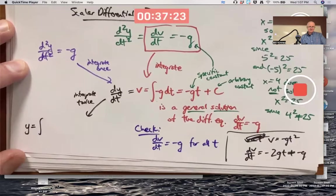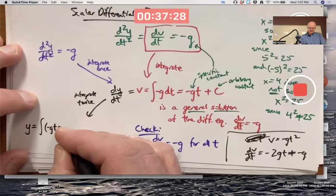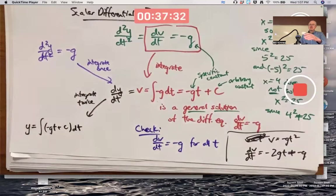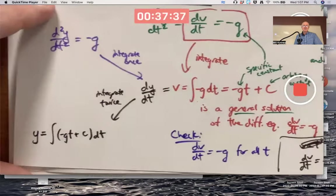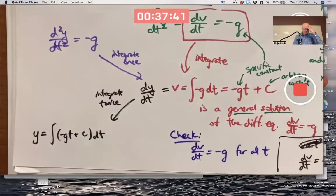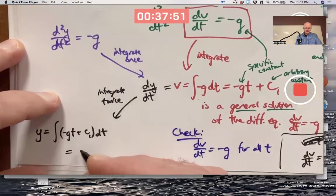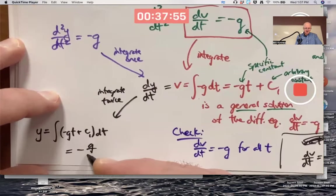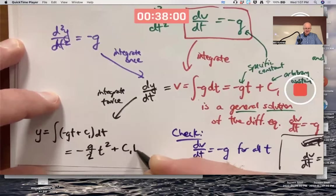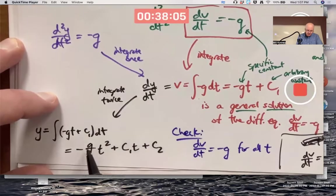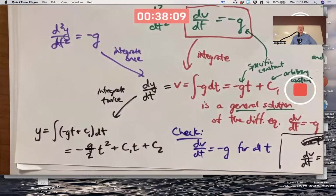Y is going to be the integral of negative GT plus C dT. We're going to get another integration constant. So maybe I should call this one C1, and the integration constant that I get here is going to be called C2. Integrate that with respect to T. You're going to get something that should look kind of familiar: negative G over 2 T squared plus C1 T plus C2. If G is 9.8, you're near the surface of the earth, G over 2 is 4.9. C1 and C2 could be anything. These are general solutions.